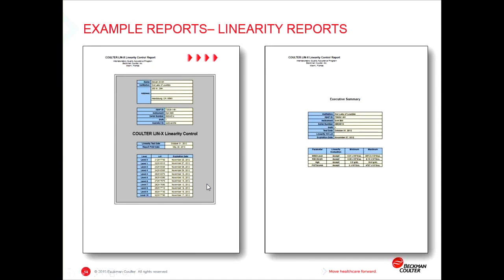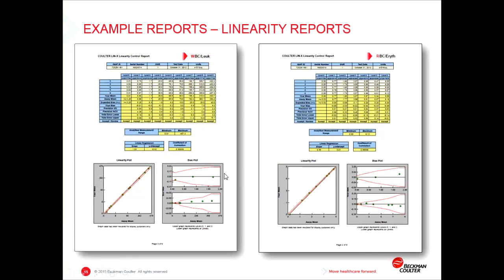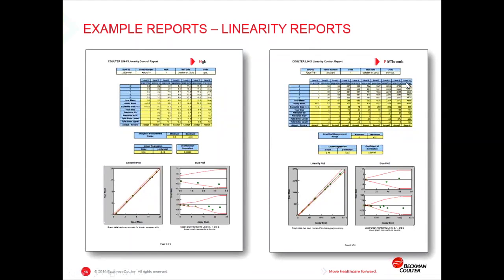The next set of example reports covers linearity reports. The linearity control reports are a slightly different assay and therefore have a slightly different set of report profiles. You can have the linearity plot, the bias plot, and a tabular format showing all the different levels of controls, as well as mean values, assay values, bias, et cetera. In one sheet, you can get a very good understanding of your performance for a singular linearity control. This first report is for WBC leukocytes; we also have RBC erythrocytes, hemoglobin, and platelets available in this format, so you can really tell how your instrument is performing with each cell population.